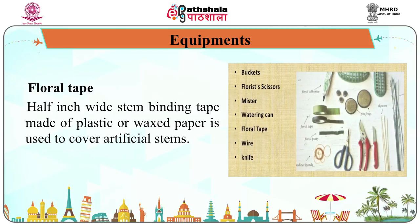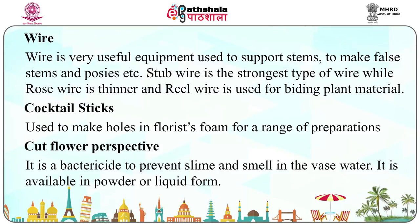The third example of equipment is floral tape: a half-inch wide stem-binding tape made of plastic or waxed paper used to cover artificial stems. The fourth example is wire, a very useful equipment used to support stems, make false stems, and posies. Stub wire is the strongest type, while rose wire is thinner, and reel wire is used for binding plant material.